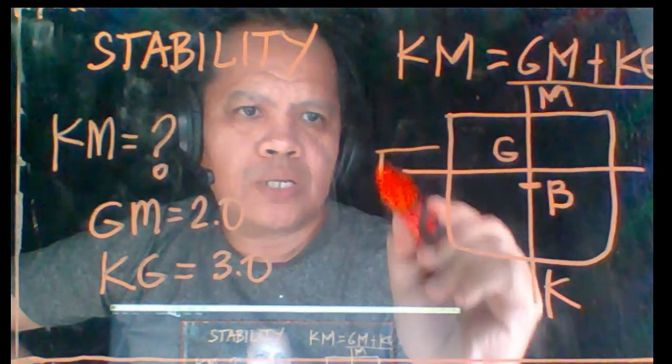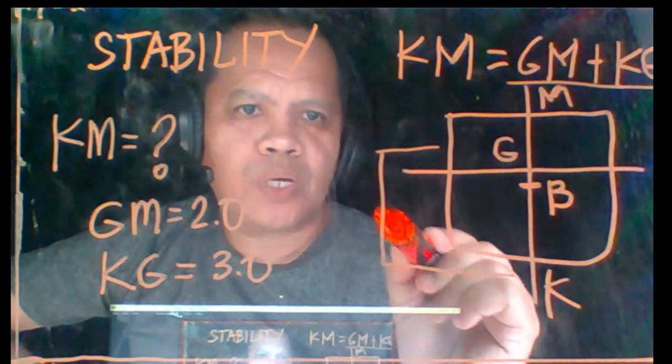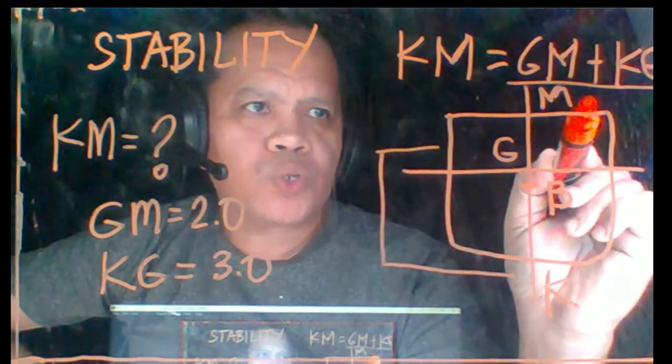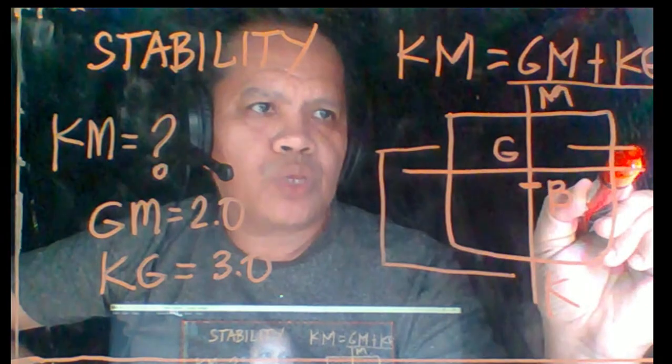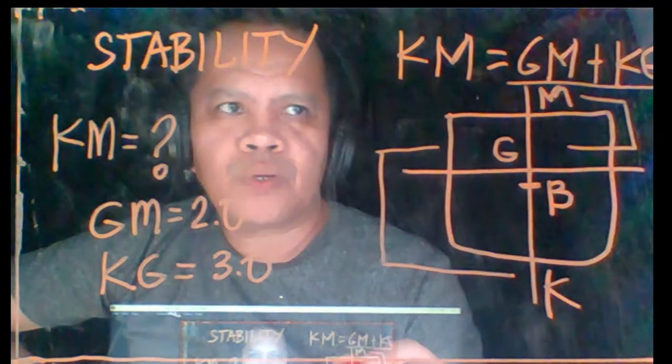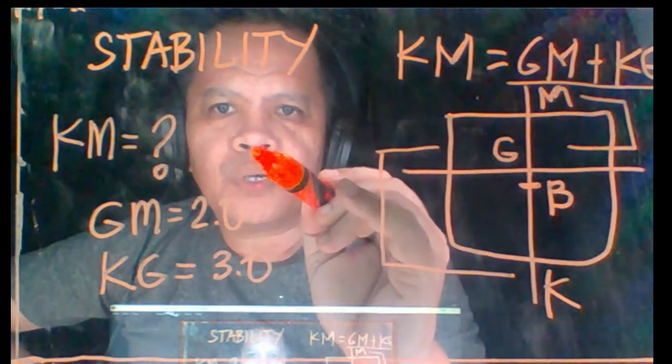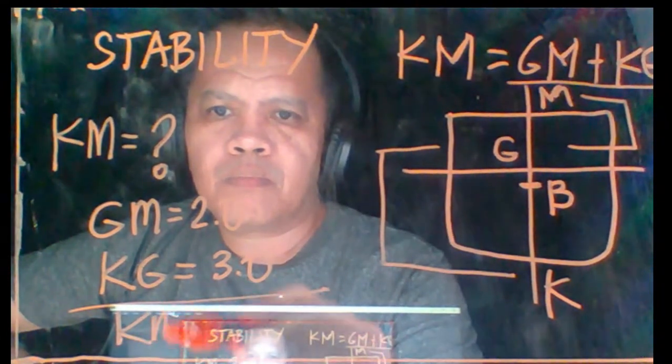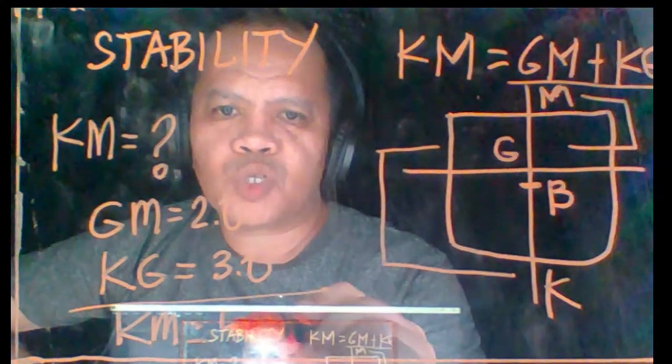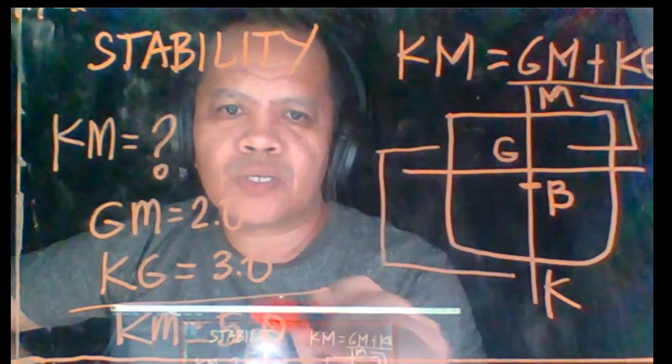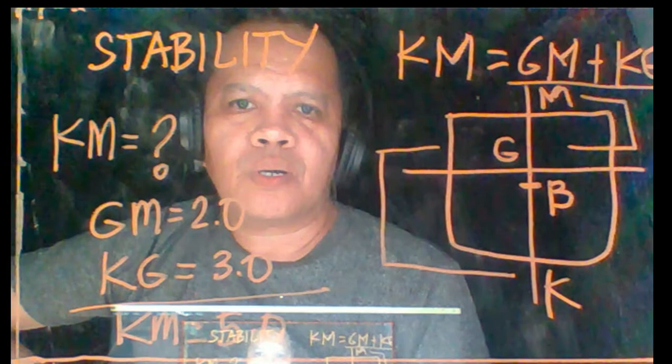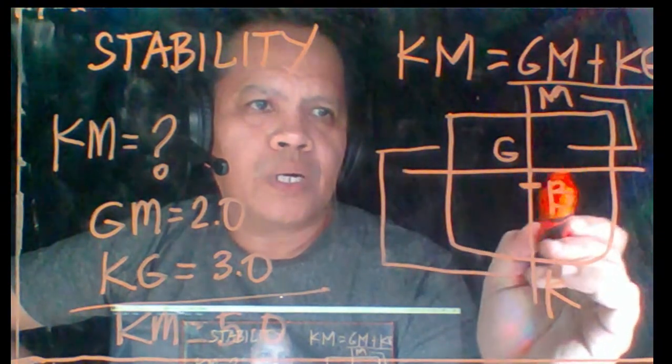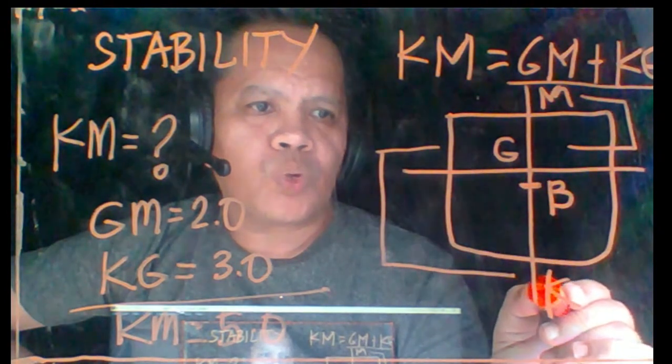So you just measure here, this is your distance from keel to K, K to G, and this is also your G to M. So you derive that your KM is 5.0. It's just very simple, the total of the KM.